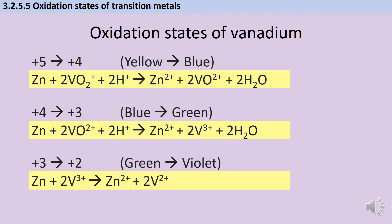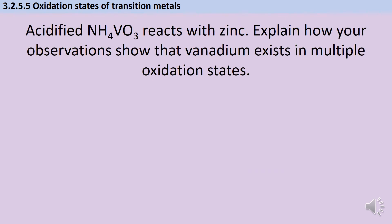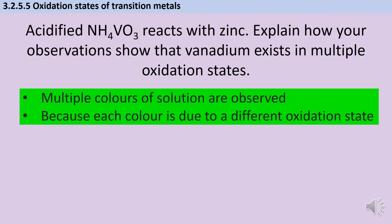To recap the oxidation states of vanadium: the first colour change goes from yellow to blue as the oxidation state changes from plus five to plus four. Then blue turns to green as it goes from plus four to plus three. Then green turns to violet as the oxidation state changes from plus three to plus two. An exam question might ask: 'Acidified ammonium metavanadate reacts with zinc — explain how your observations show that vanadium exists in multiple oxidation states.' The answer is that you can see multiple colours of solution, and each colour corresponds to a different oxidation state of the metal.